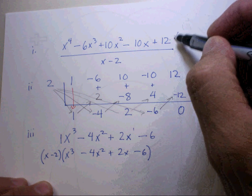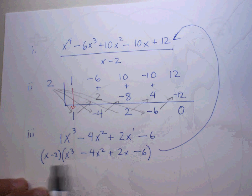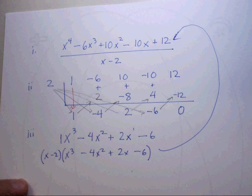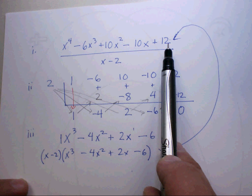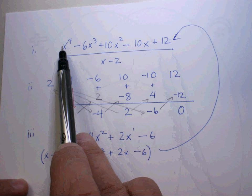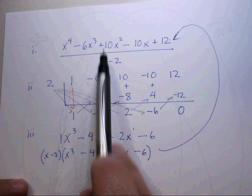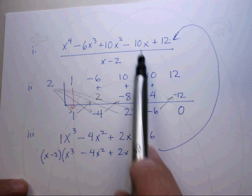If you were to take this and multiply it by x minus 2, use any box method you want, use a modified FOIL method, you'll get back to this original answer. These are your two factors, and that's how you do synthetic division.